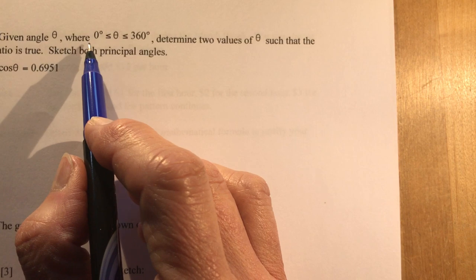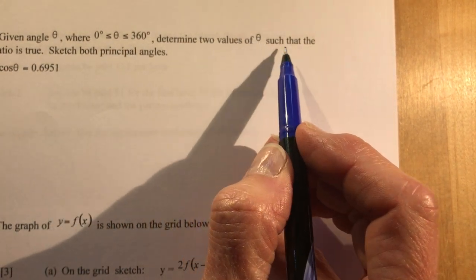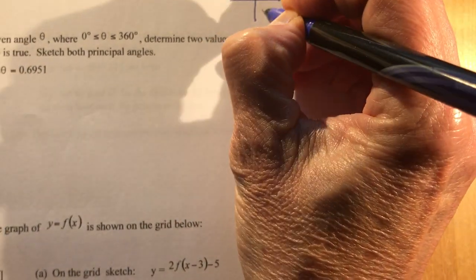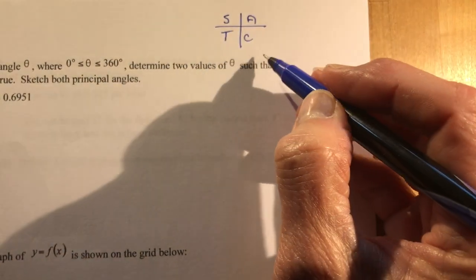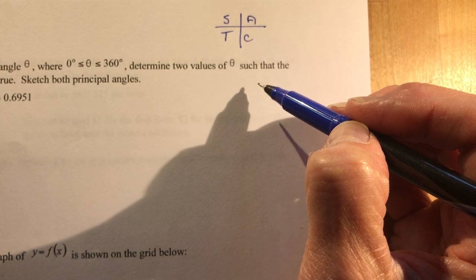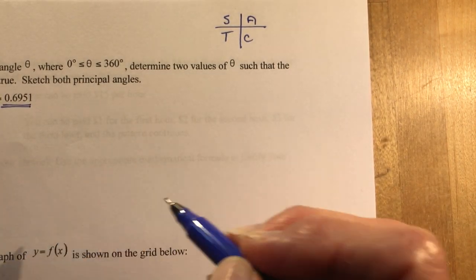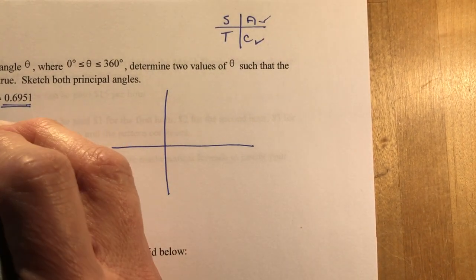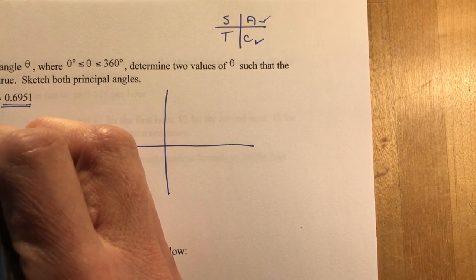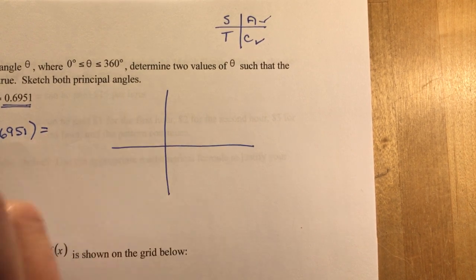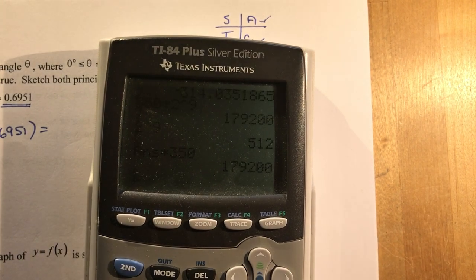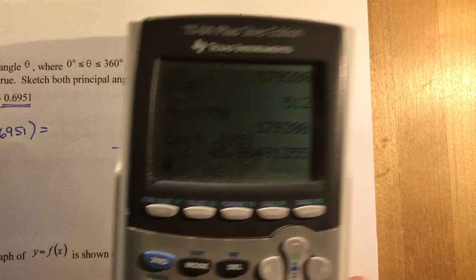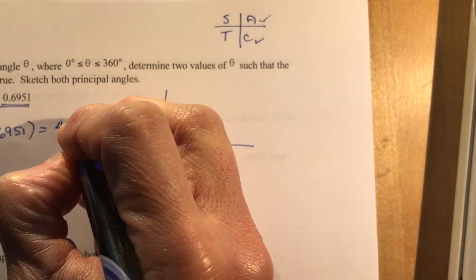Number 4. It says given angle theta, where theta is between zero and 360 degrees, determine two values of theta such that the ratio is true. Sketch both principal angles. So you know by the CAST rule, the CAST rule tells you in which quadrant the various trigonometric ratios are positive. If this ratio is positive, which it is, that means the cosine must be in this quadrant and this quadrant. So let's find the value of it. Remember, this is a ratio. You're trying to find an angle. I'm going to do the inverse. I'm going to go into my calculator. Second cos 0.6951 equals, and I get about 46 degrees.